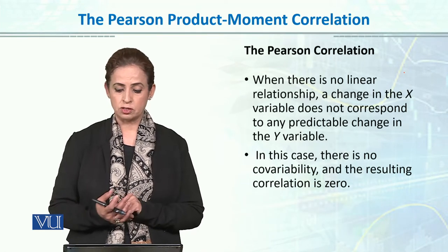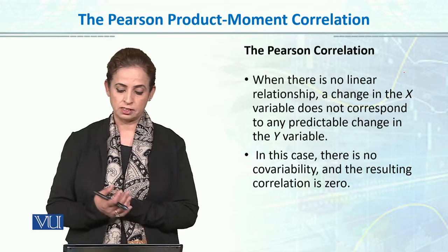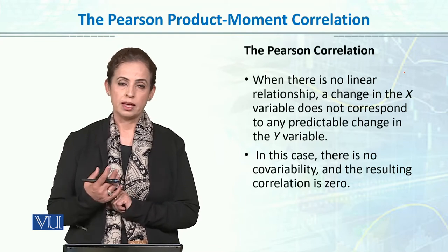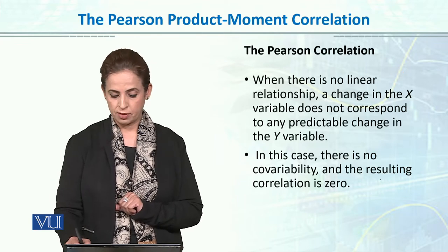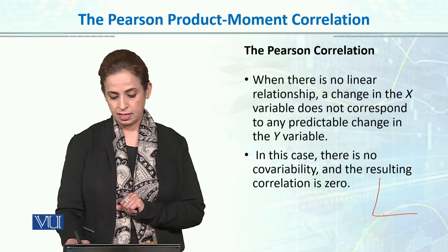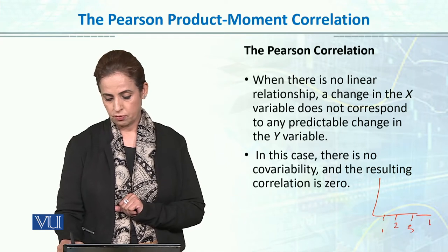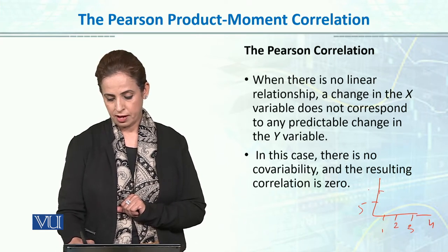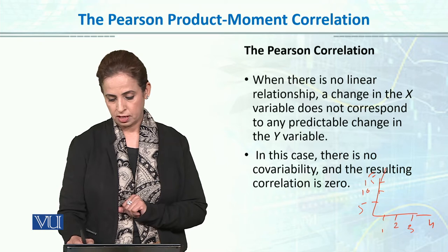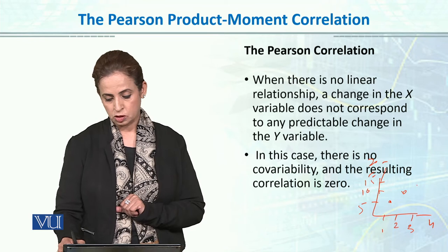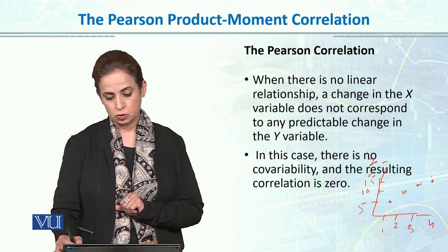When there is no linear relationship, a change in the x variable does not correspond to any predictable change in the y variable. For example, if x values are 1, 2, 3, 4 and y values are 5, 10, 15, 20 — so if x is 1, y is 5; x is 2, y is 10; x is 3, y is 15; x is 4, y is 20 — this is the perfect linear relationship example.